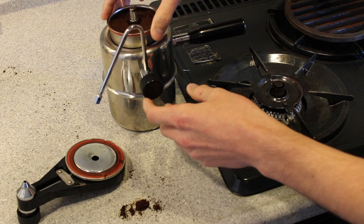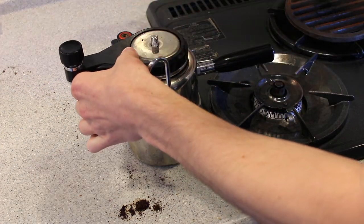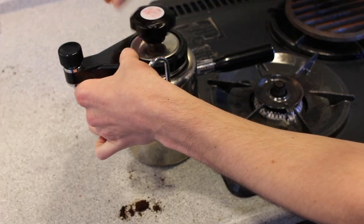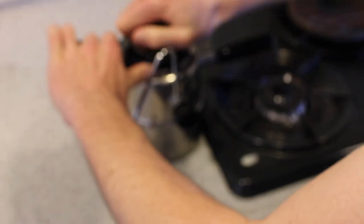Place the basket into the machine and clean any grinds off the thread of the central stud. The head of the machine can go on in any orientation. I usually fasten mine with the coffee valve pointing away from the handle as that just works best for my stove.